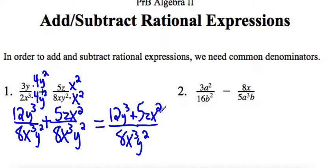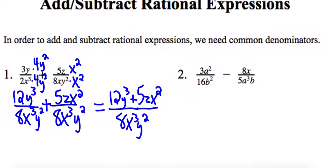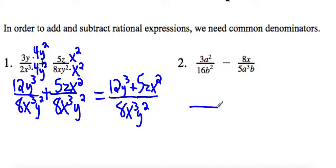Let's take a look at number 2. Same idea - we want to get a common denominator. First I'm going to look at the numbers, 16 and 5. I don't know anything in common with those. If you don't know with numbers, you can just multiply them by each other. So 16 times 5 is 80. I'm going to have 80 on the bottom of both of these. So I need to multiply top and bottom by 5.